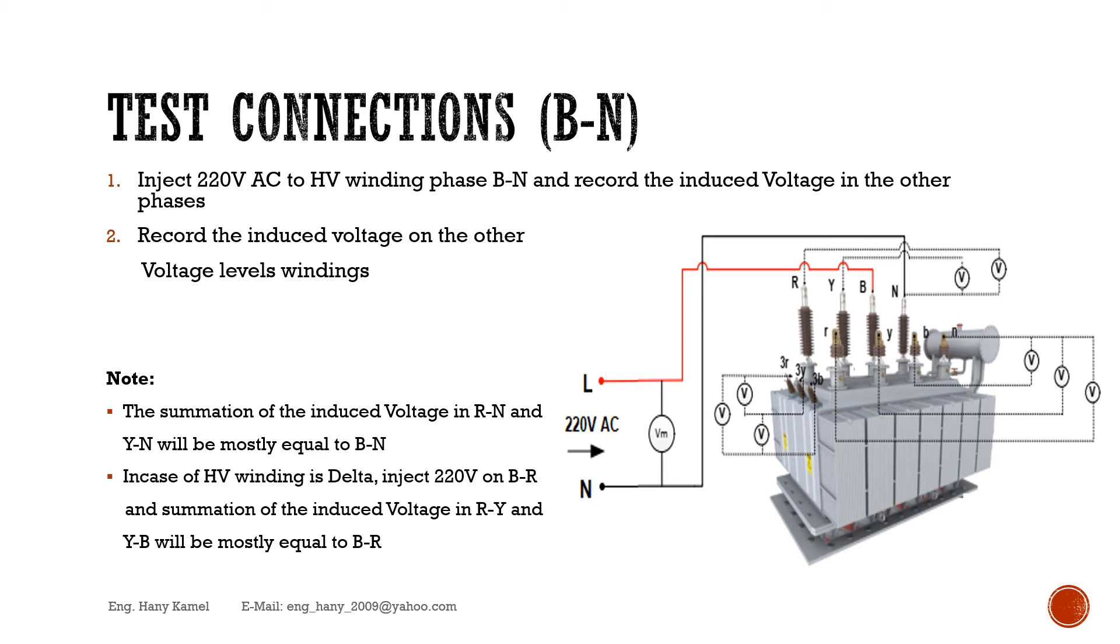In case of HV winding is delta, inject 220 volts on B-R and summation of the induced voltage in R-Y and Y-B will be mostly equal to B-R.